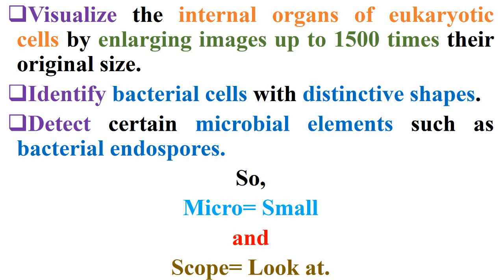The light microscope is used to visualize the internal organs of eukaryotic cells by enlarging images up to 1,500 times their original size. It is also used to identify bacterial cells with distinctive shapes and detect certain microbial elements such as bacterial endospores.